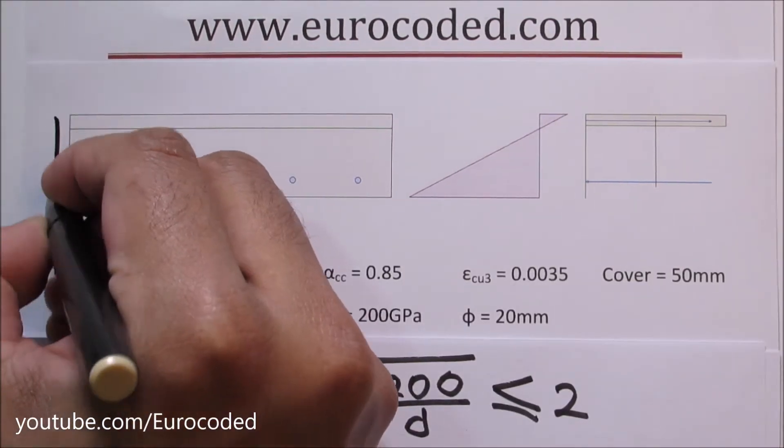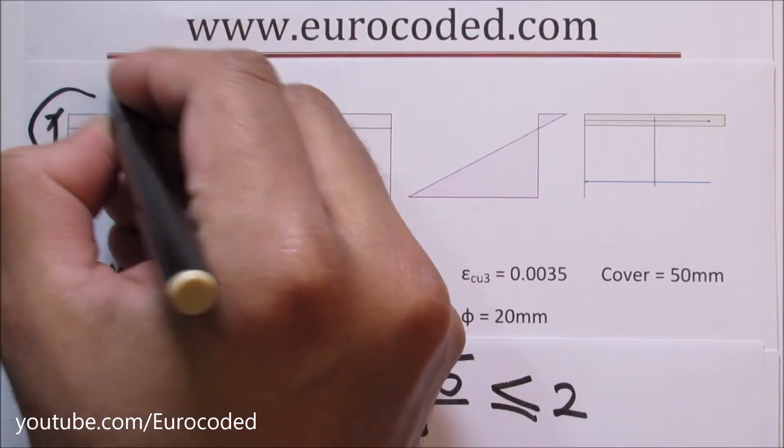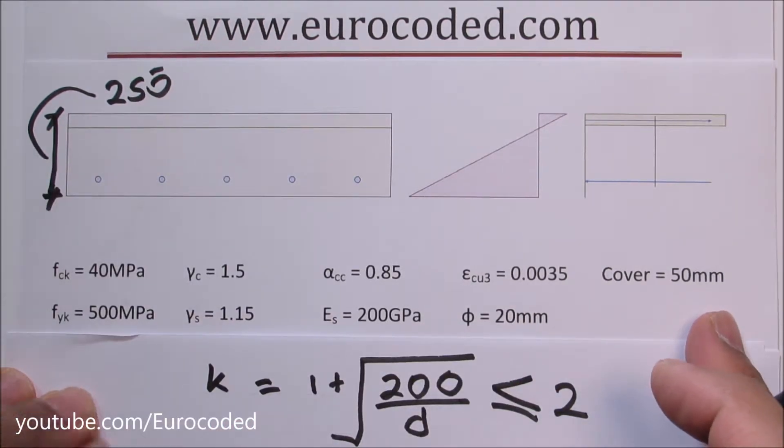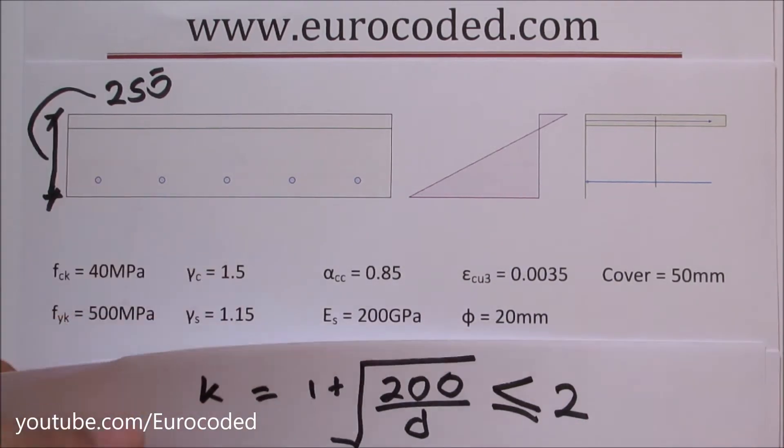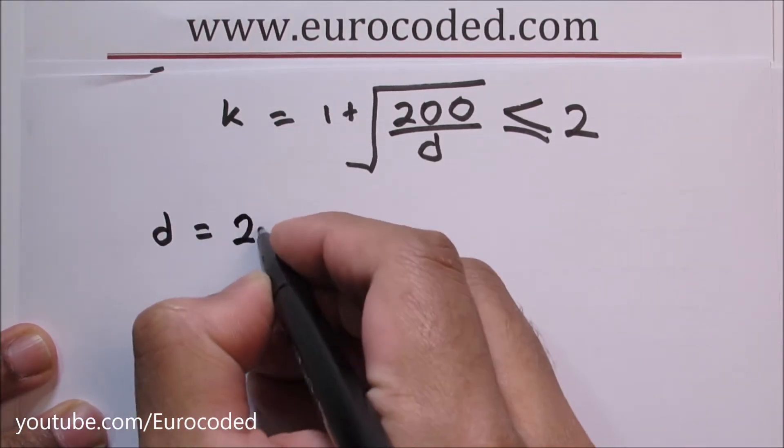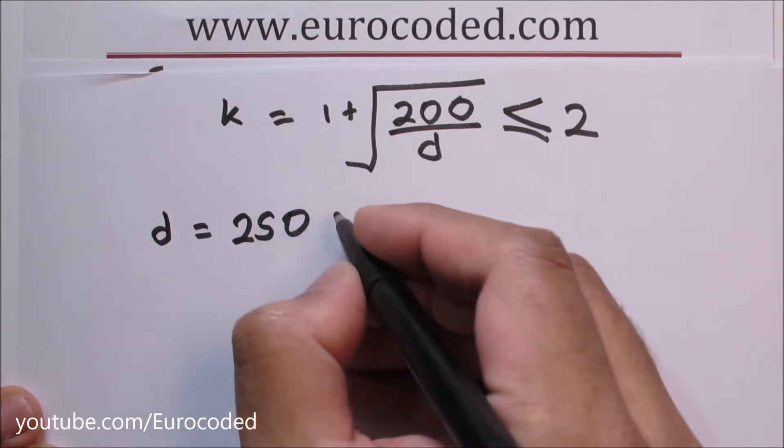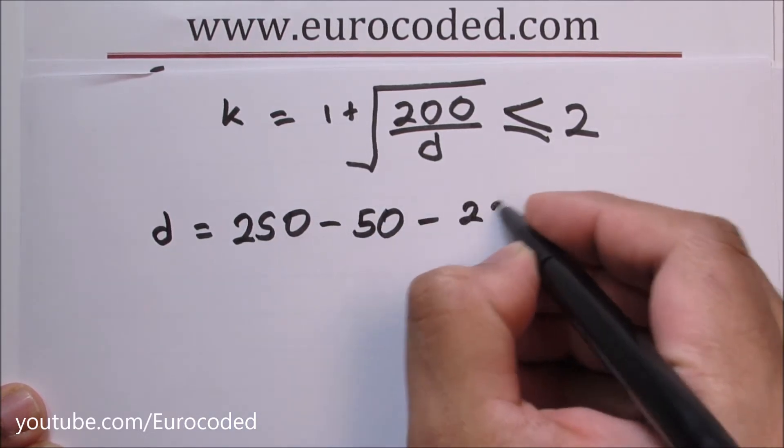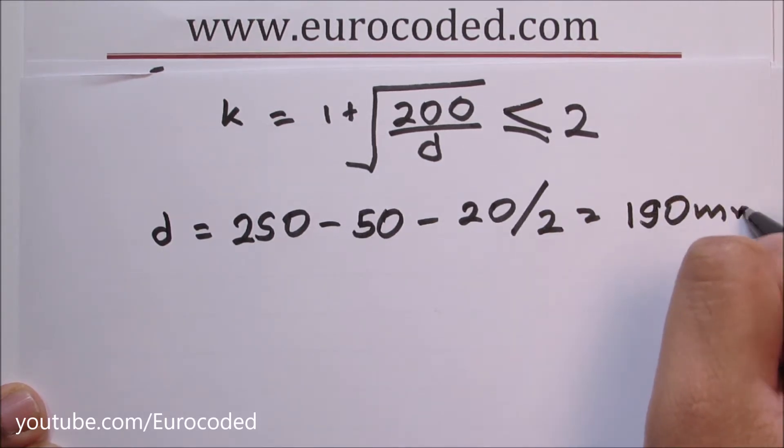From our previous example the depth of the section is 250 and our concrete cover is 50 millimeters. Our longitudinal reinforcement bar diameter is 20 millimeter. So we can write effective depth d is equal to 250 which is the depth of our concrete slab minus concrete cover which is 50 millimeters and half of the longitudinal bar diameter. This comes to 190 millimeter.